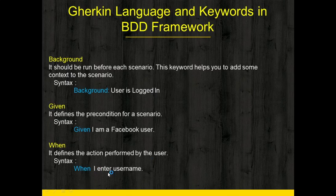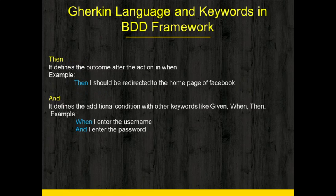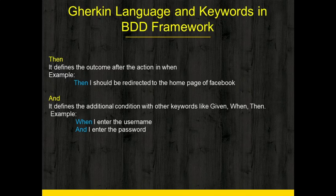The action in our case could be: When I am entering the username for Facebook. Then we have the Then keyword, which defines the outcome of the When action. So in our case, after entering the username and password, the outcome would be: Then I should be redirected to the home page of Facebook. The And keyword is used to define additional conditions alongside other keywords — we can use And with Given, When, and Then. For example, combining And with When: I'm entering the username and then I'm entering the password.